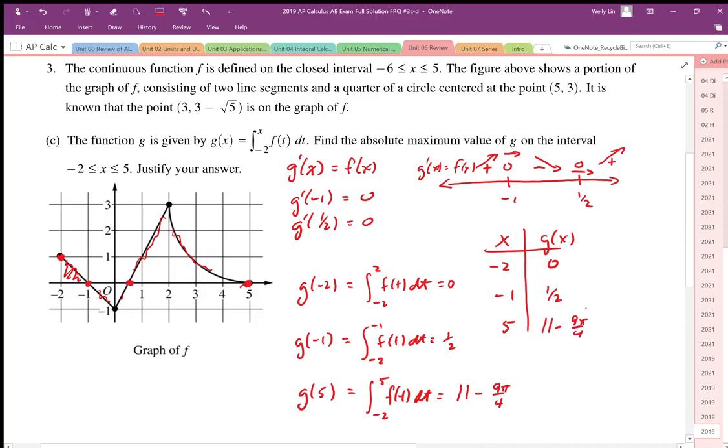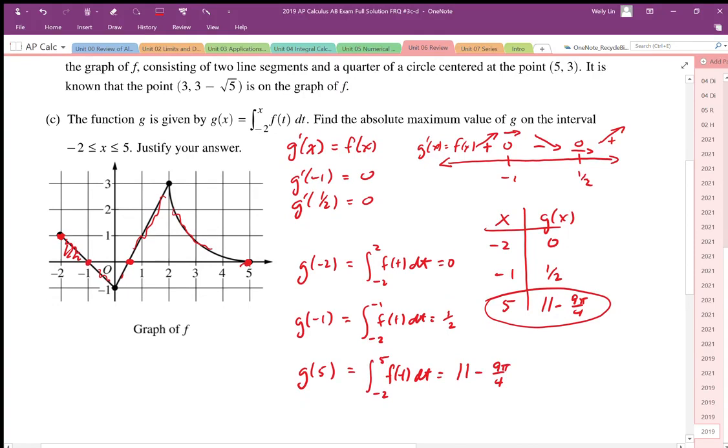Okay, and so this is our maximum value here. We know that it's increasing all the way to this max value at x equals 5. So the maximum value is 11 minus 9 pi over 4.